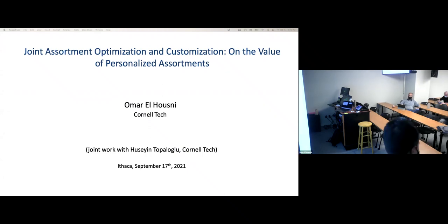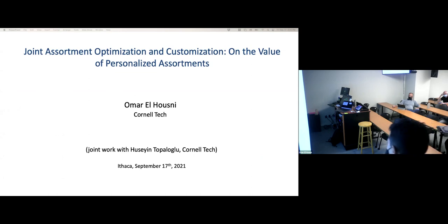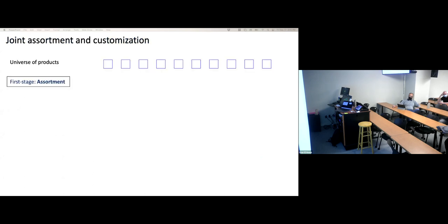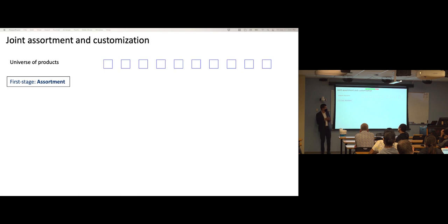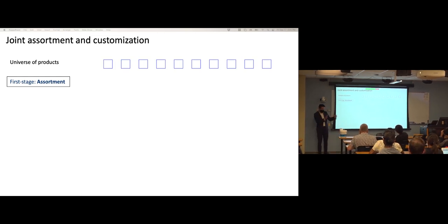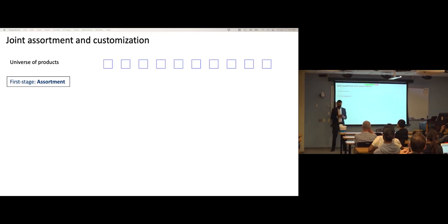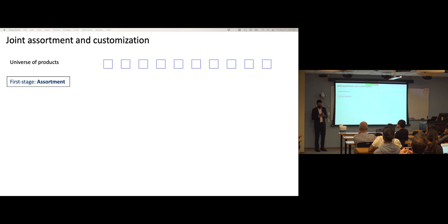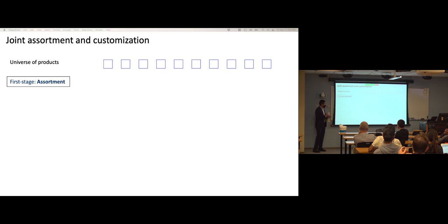Thank you everyone for coming today. I'll be presenting joint work on joint assortment and optimization — on the value of personalized assortment. If I get some time at the end I will talk about some other work. Let's start by introducing the problem. We have a firm that has access to a universal set of products, and initially the firm needs to select a subset of these products to sell to customers.